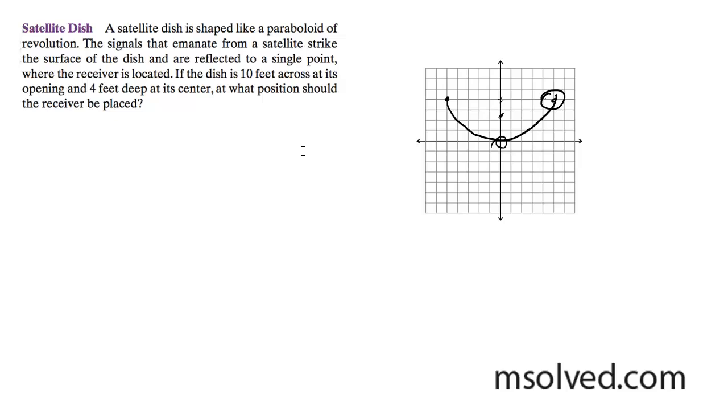We have a satellite dish that's facing up, or however you want to do it, but it's easiest this way. It is 10 feet across and it's 4 feet deep, so it's in the form x squared is equal to 4 ay.